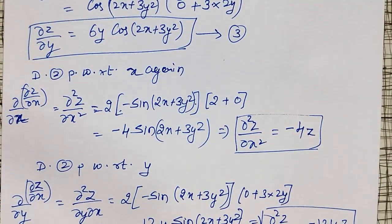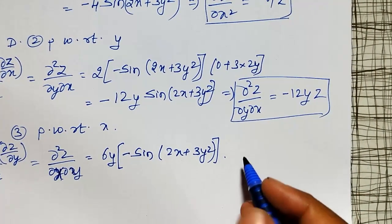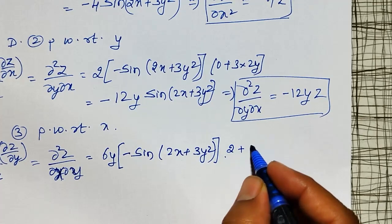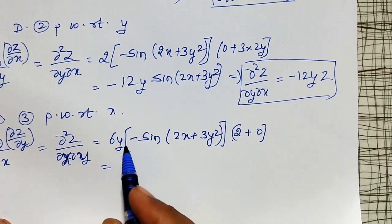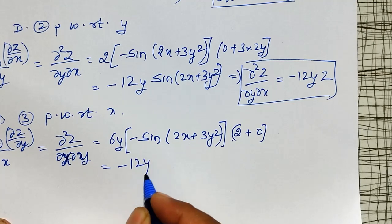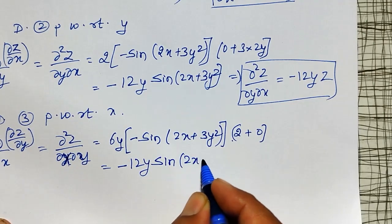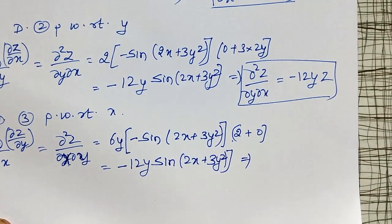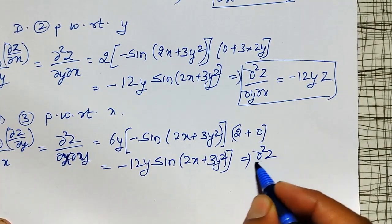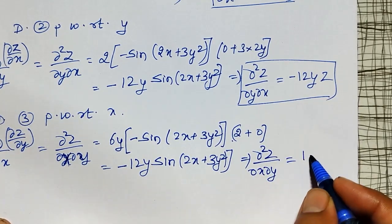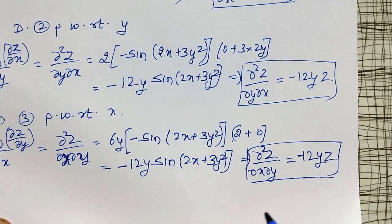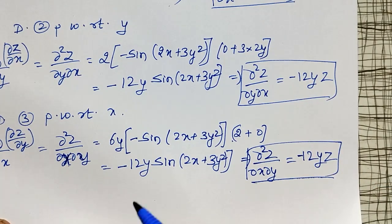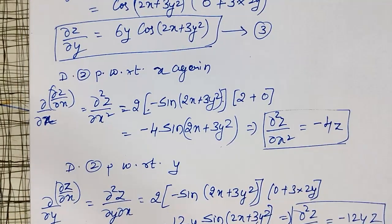Differentiating 6y·cos(2x + 3y²) partially with respect to x: the partial derivative of (2x + 3y²) with respect to x gives 2 + 0 = 2. So we get −12y·sin(2x + 3y²) = −12yz. Therefore ∂²z/∂x∂y = −12y·z. You can observe that ∂²z/∂y∂x and ∂²z/∂x∂y are one and the same — we have proved that here.